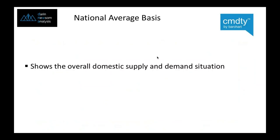National average basis shows us the overall domestic supply and demand situation. We can narrow this down — as Michael talked about, we can go down to the county level. In a presentation I gave about a week ago in Ohio, I was able to show them what the county basis has been doing in chart form, comparing it to previous months. You can go from the telescopic view down to the microscopic view. The national average basis shows us the overall domestic supply and demand situation.